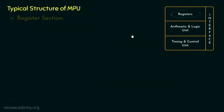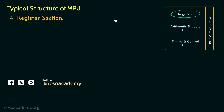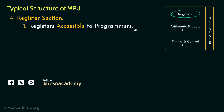Let's begin with the register section. The registers of the 8085 microprocessor are broadly classified into two different categories. At first we have the registers which are accessible to the programmers, and these registers are also categorized into two different classifications.